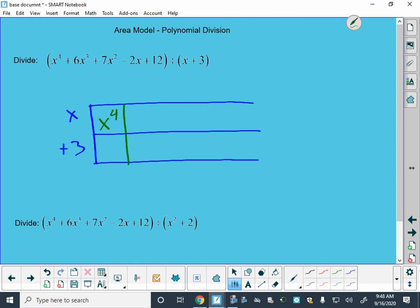And now already we see some information, other information that we can fill in. If this box is x tall and it has an area of x to the fourth, then that must mean that there was an x cubed up there to make that happen. But if that's x cubed wide, then this is x cubed wide and 3 tall, so this box must have a 3x cubed in it.